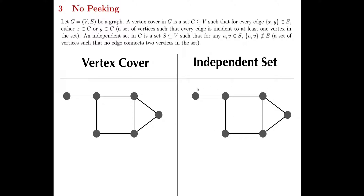Just as we had the trivial vertex cover where you select everything, we also have a trivial independent set where you select nothing at all. But if we wanted to add some vertices, let's say I added this one — that automatically eliminates me from selecting any of its three neighbors. I could stop here, or I could make it bigger by selecting one of these two. But that means I can't select its neighbor, so this completes the independent set and I can't make it any bigger.